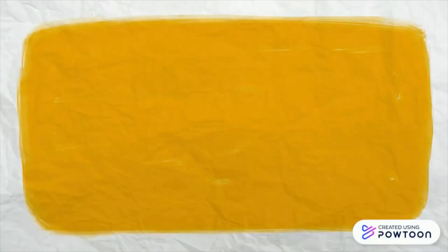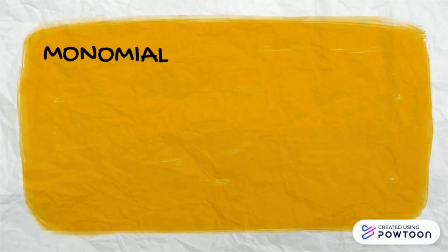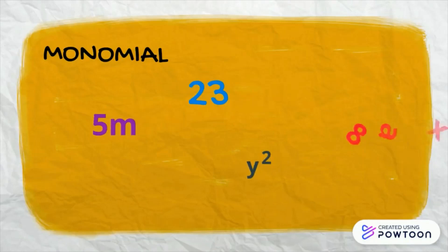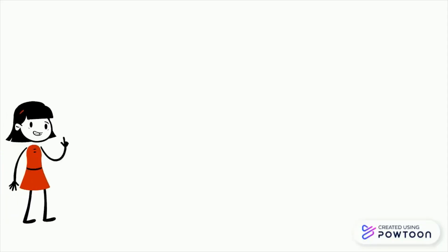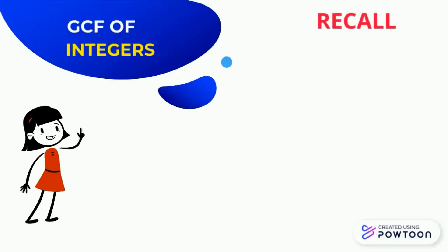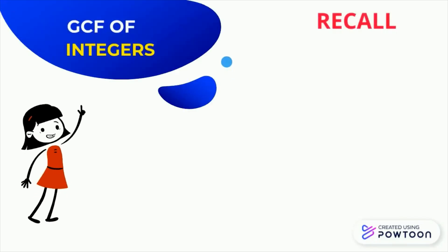Our fourth word is monomial. A monomial is an expression in algebra that contains one term, like 23, 5m, y squared, 8ax. Monomials include numbers, variables, and numbers and variables together. Let us have a look at finding the GCF of integers.